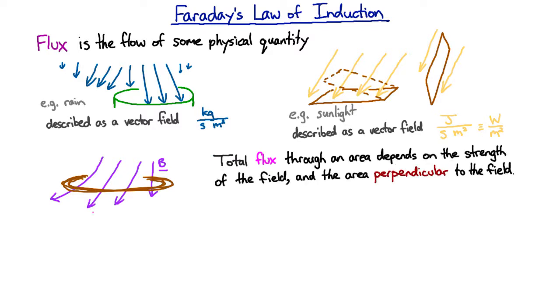The magnetic flux through the coil is usually defined by the symbol capital Φ, and it's just equal to the magnetic field times the perpendicular area.